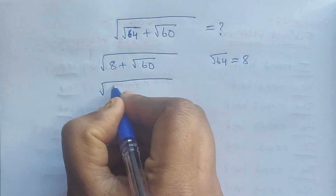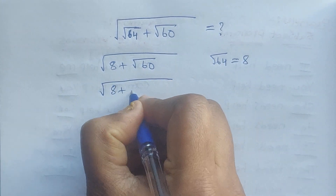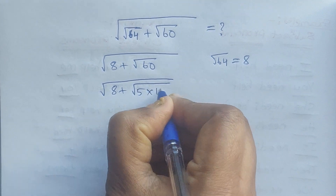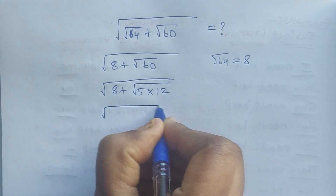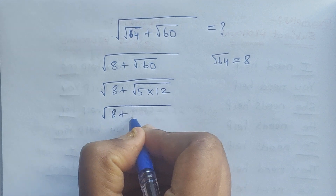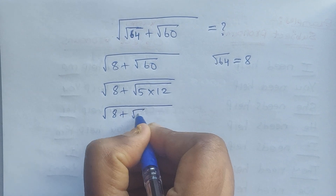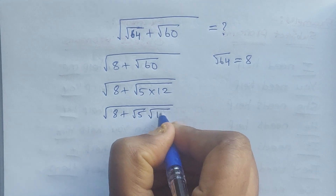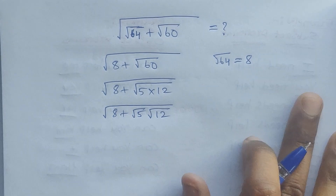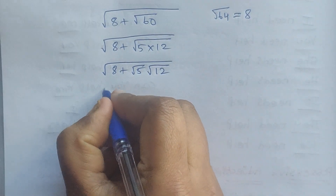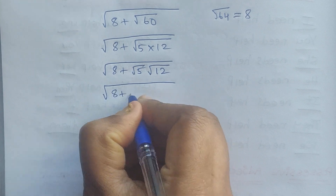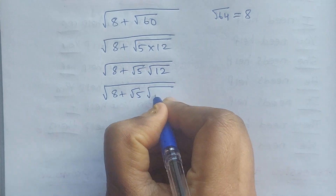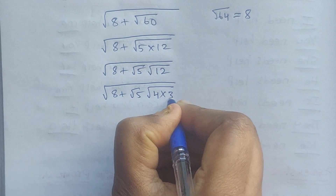Square root of 60 we can write as square root of 5 times 12. So we have 8 plus square root of 5 times square root of 12. Square root of 12 we can write as 4 times 3.